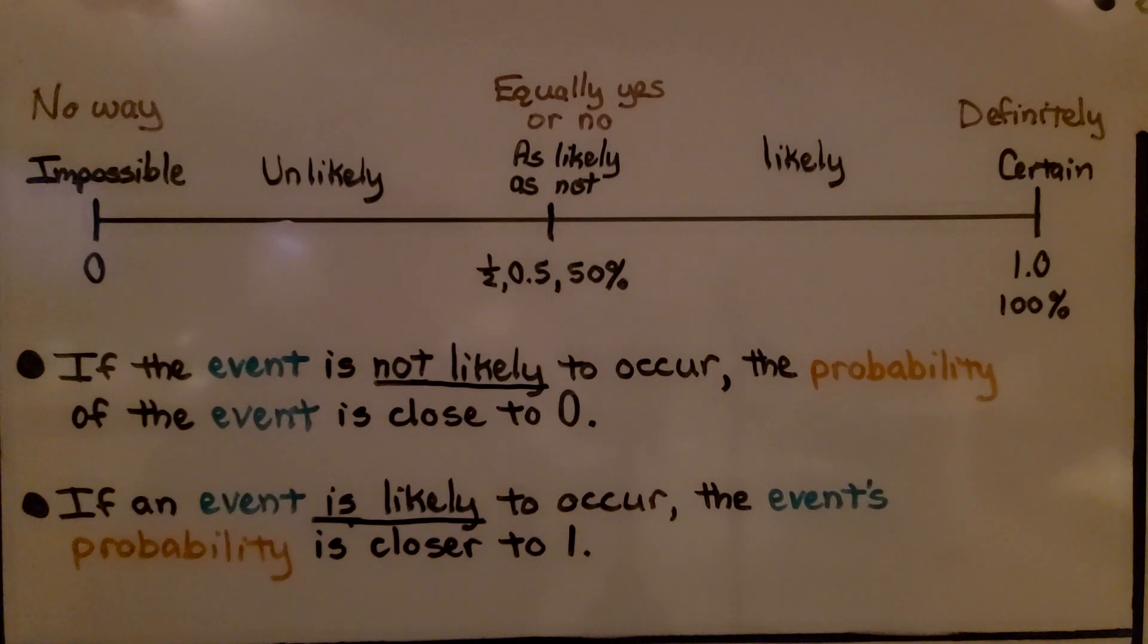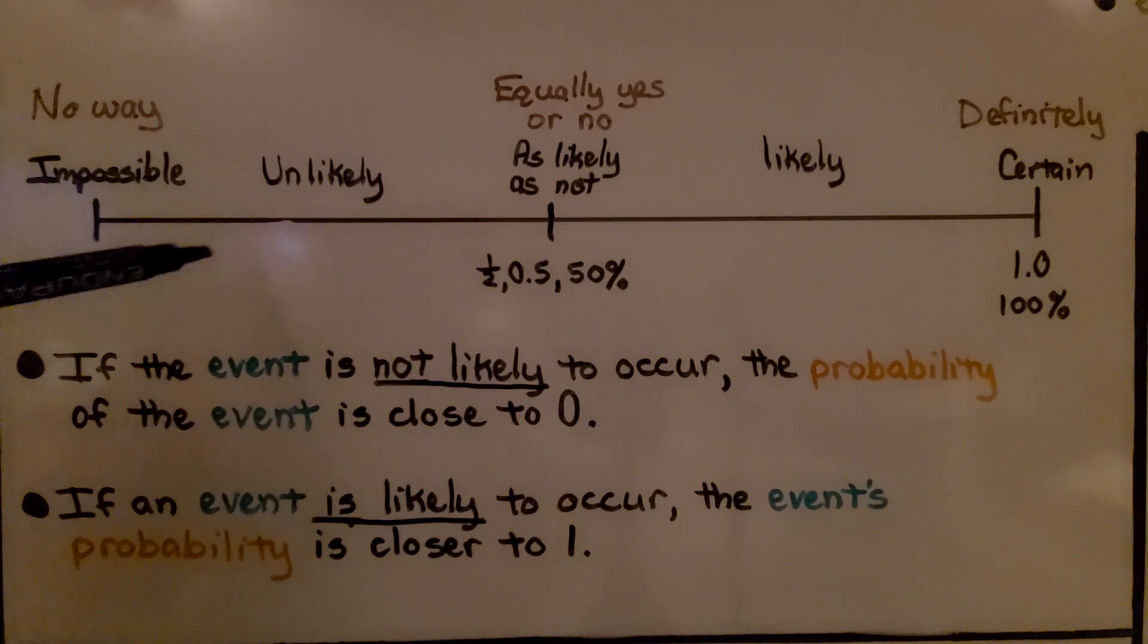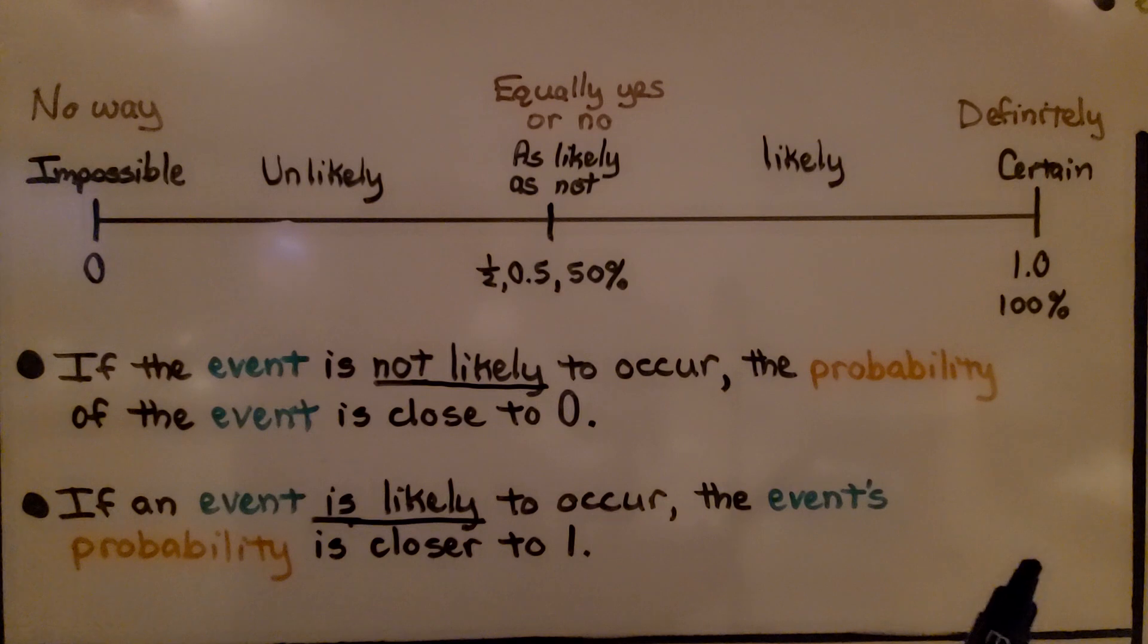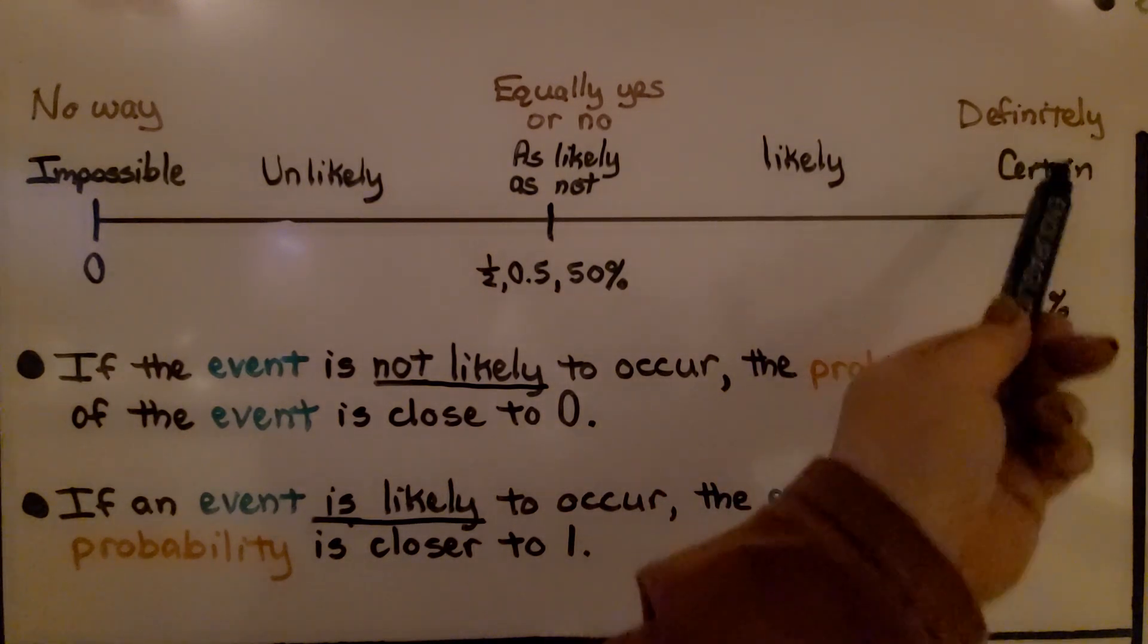So as we learned before, if an event is not likely, it's unlikely to occur, the probability of the event is closer to 0, which would be impossible. It would be no way it would happen. And if an event is likely to occur, then the event's probability is closer to 1. It's closer to certainly happening.